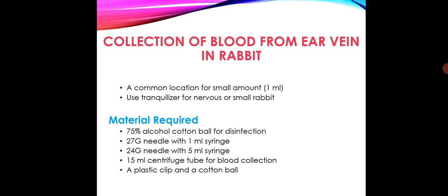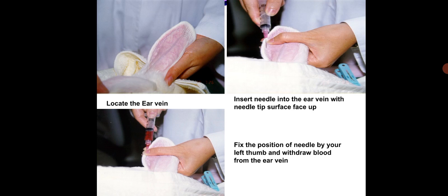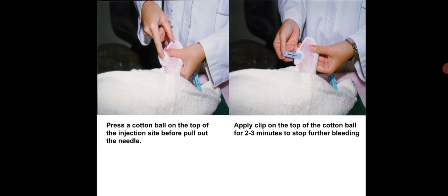Collection of blood from the ear vein in rabbit — a common location for small volume blood collection. Use a tranquilizer for nervous or small rabbits. Materials required are: 75 percent alcohol cotton ball for disinfection, 27 gauge needle with 1 ml syringe, 24 gauge needle with 5 ml syringe, 15 ml centrifuge tube for blood collection, a plastic clip, and a cotton ball. Locate the ear vein and insert the needle with the needle tip surface facing up. Fix the position of the needle with your left thumb and withdraw blood from the ear vein. Press the cotton ball on the injection site before pulling out the needle, and apply the clip on top of the cotton ball for 2 to 3 minutes to stop further bleeding.